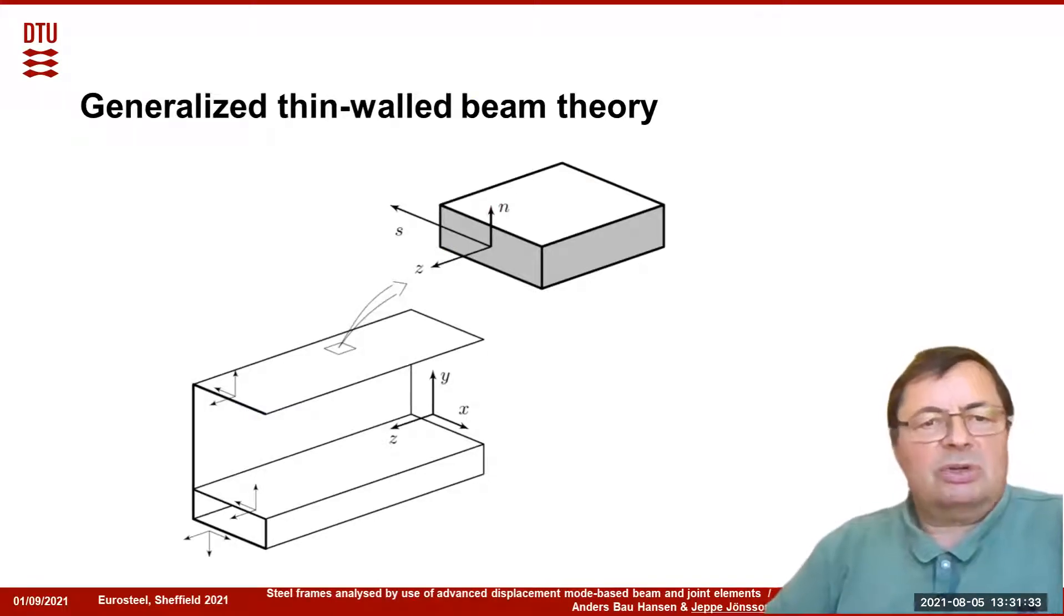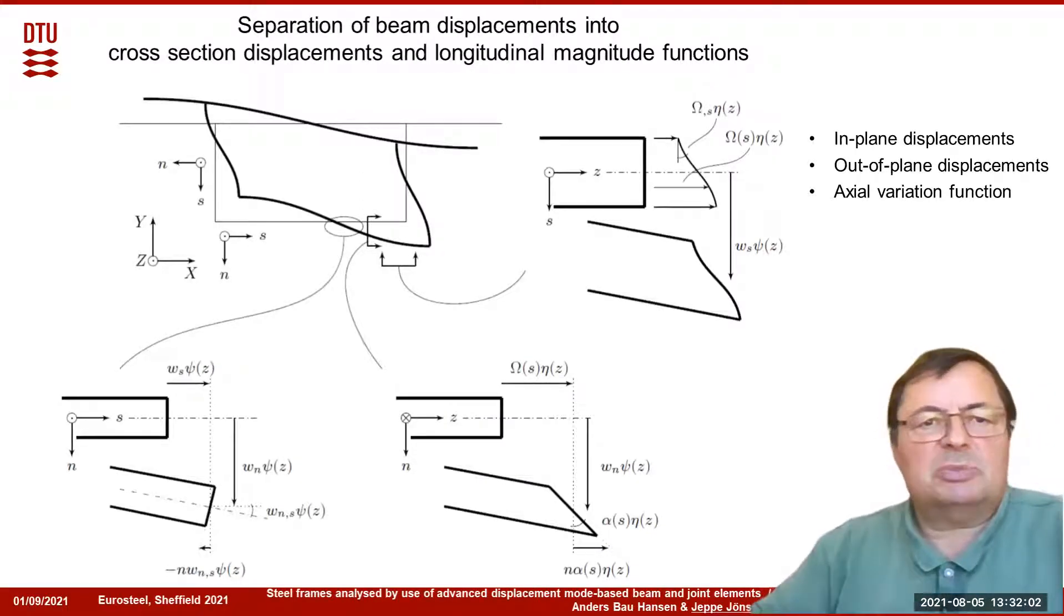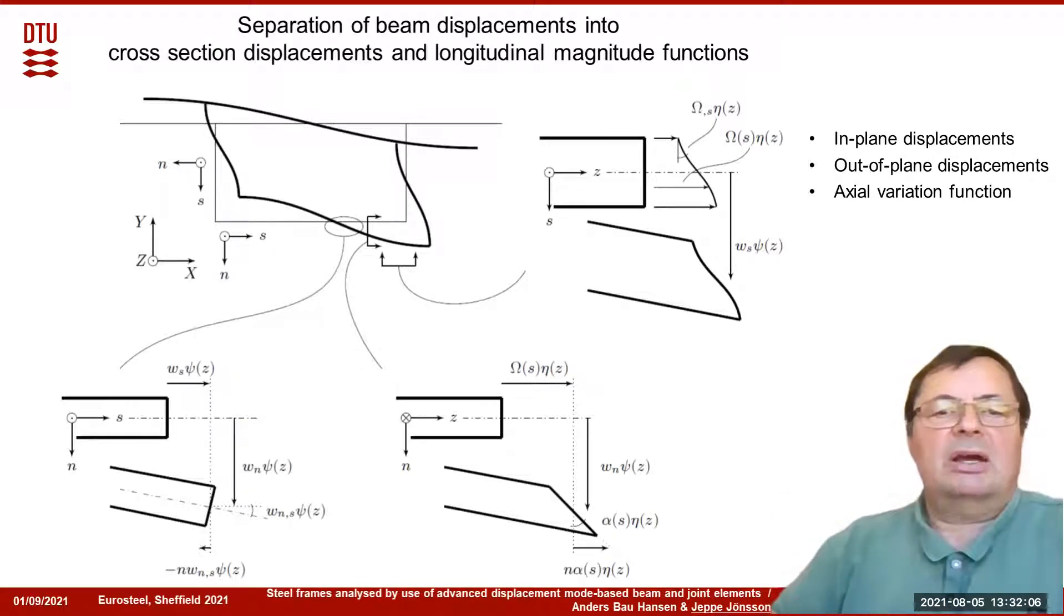Let's start describing the generalized thin-walled beam theory. The beam theory is developed as a one-dimensional theory where we can describe the cross section as thin walls, and we introduce a local coordinate system, an S system for each wall element describing the cross section. The cross section shape is the same all the way along the beam.